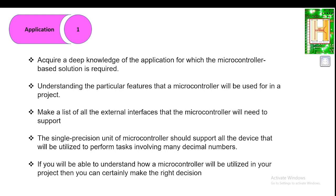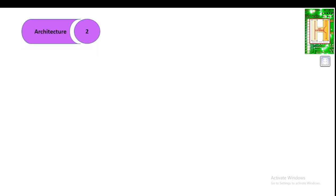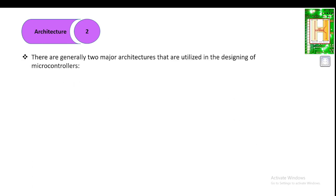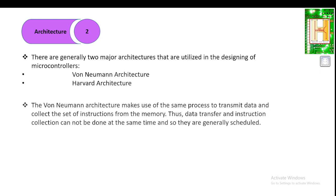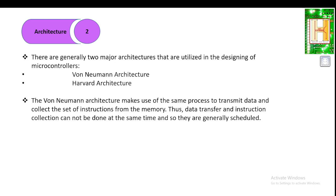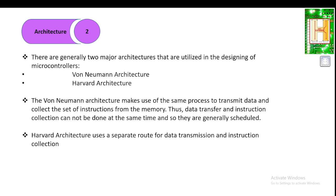If you are able to understand how the microcontroller will be utilized in your project, you will certainly make the right decision. The next step is architecture. The term microcontroller architecture means how the microcontroller is designed internally. There are two major architectures: Von Neumann architecture, which uses a single bus to transmit data and fetch instructions from memory, so data transfer and instruction collection cannot be done simultaneously.